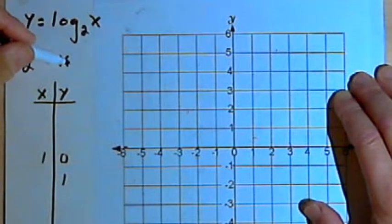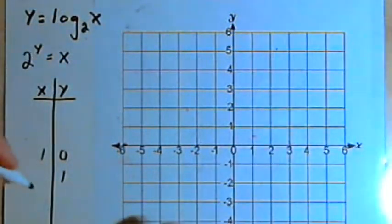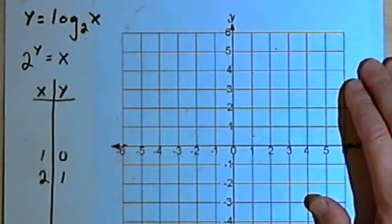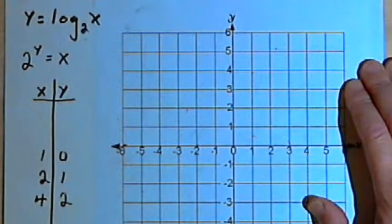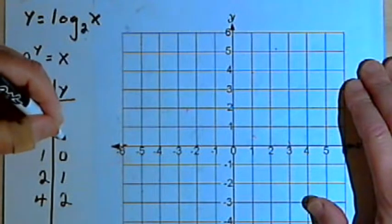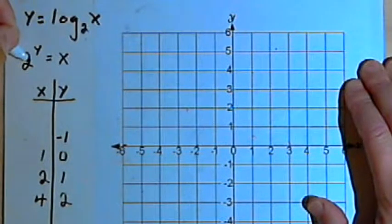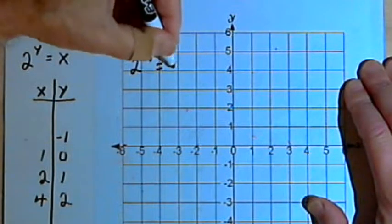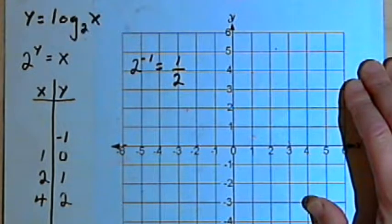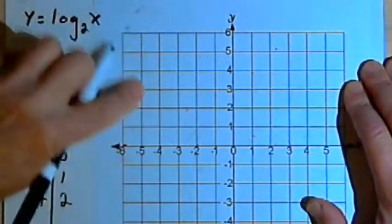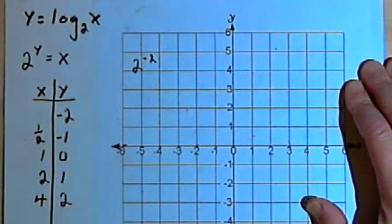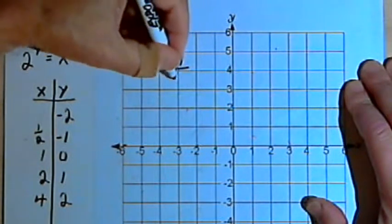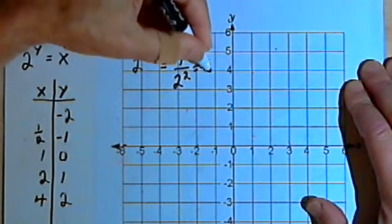When y is 1, x is going to equal 2 to the first power, which is 2 — so I'll have a point at (2, 1). When y is 2, x will equal 2 to the second power, or 2 squared, which is 4. For negative numbers: when y is negative 1, x equals 2 to the negative 1, which converts to the fraction one-half. And when y is negative 2, x equals 2 to the negative 2, which is 1 over 2 squared, or 1 over 4.